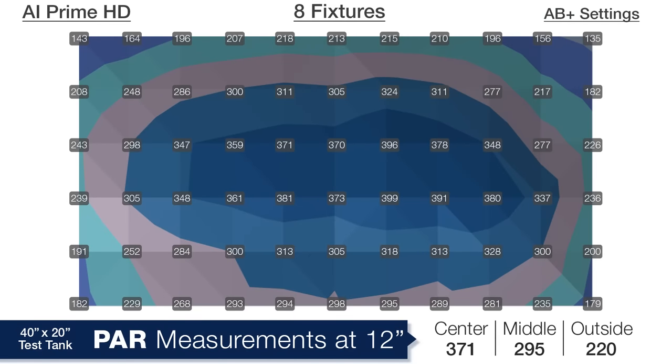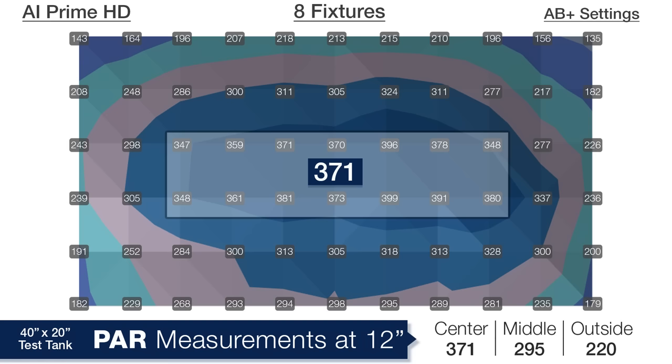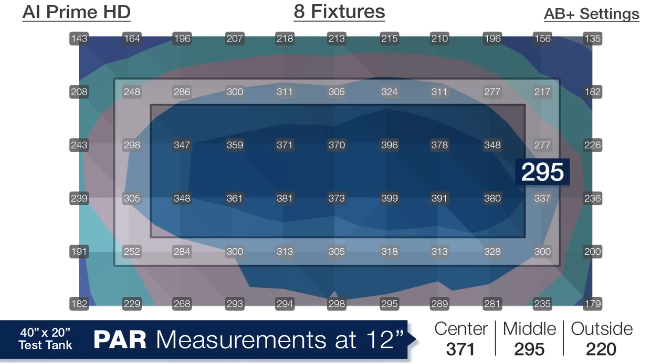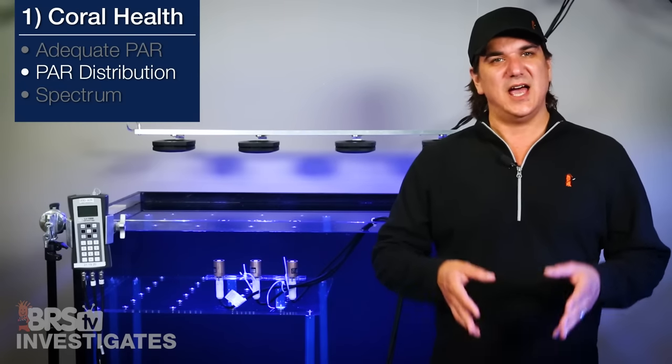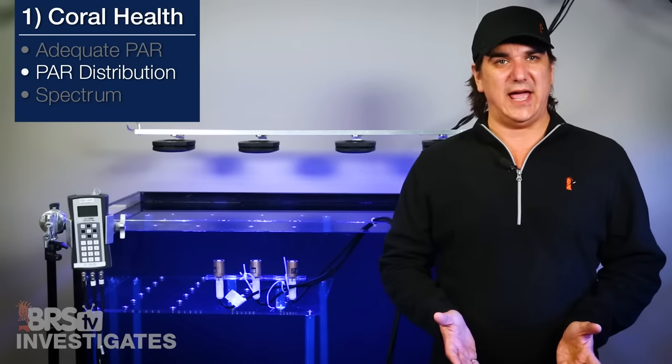Moving down to a depth of 12 inches, continued results with 371 in the center, 295 in the middle ring, and 220 on the edges. This is right in that perfect pocket for most SPS and light coming from virtually every angle.